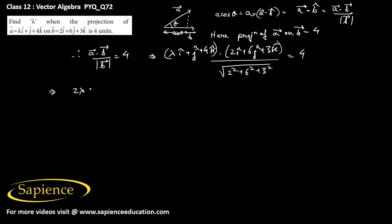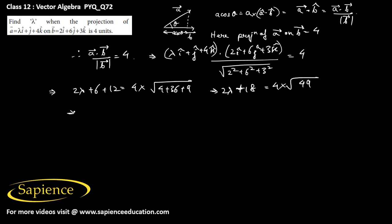This gives 2 lambda plus 6 plus 12 divided by square root of 4 plus 36 plus 9, so 2 lambda plus 18 equals 4 times square root of 49, which is 4 times 7, equals 28. Therefore 2 lambda equals 28 minus 18, which is 10, so lambda equals 5. This is the required value of lambda.